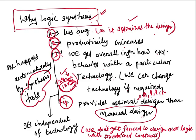All these advantages — less bugs, increased productivity, technology information, and optimal design — are not done manually. Everything happens automatically by the synthesis tool. For example, there is a synthesis tool called Design Compiler, provided by Synopsys, and it automatically handles all these tasks.